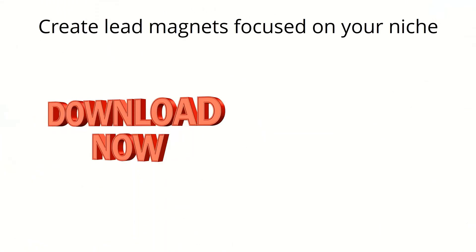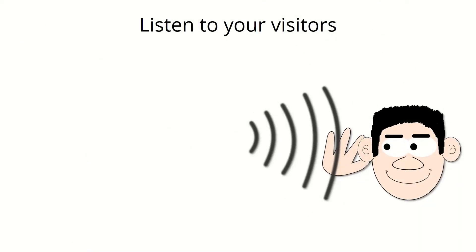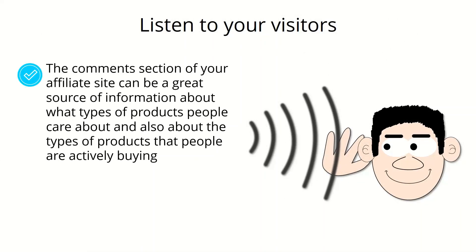Create lead magnets focused on your niche. A niche-focused lead magnet such as an ebook featuring the most popular stuff on your site will not only help you capture subscribers for your affiliate site, but it can help you add a collection of links to your product pages right into your ebook content. Just remember that you can't use direct affiliate links in ebooks.